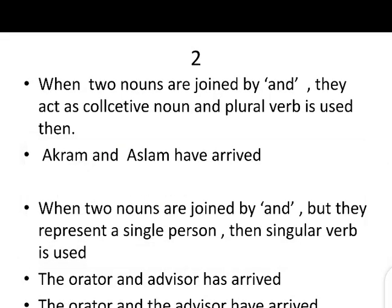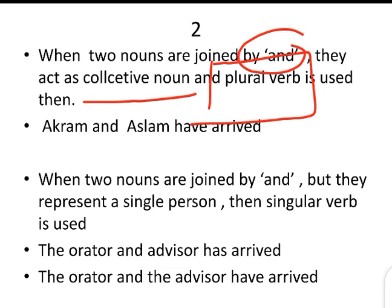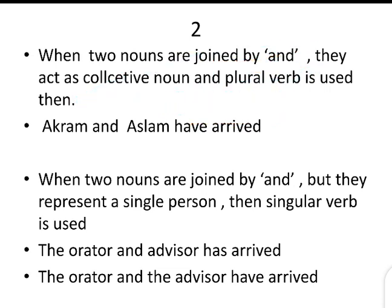Let's try to understand rule number two. When two nouns are joined by 'and', they act as collective nouns. Because of this collective noun, we then use a plural verb. When two nouns are joined by 'and', they act as a collective noun, and we have to use a plural verb.